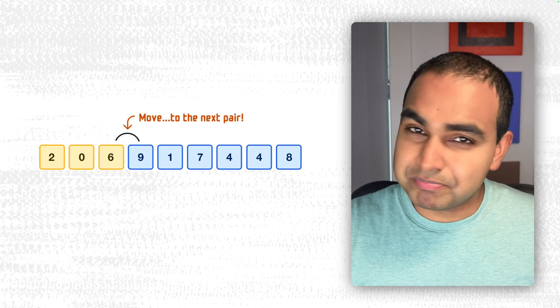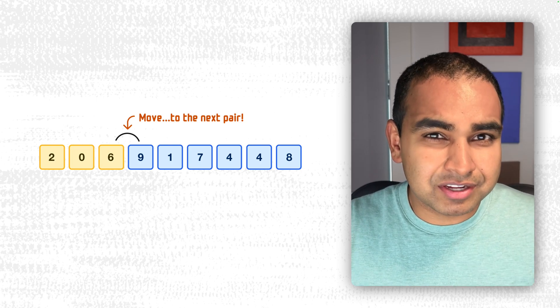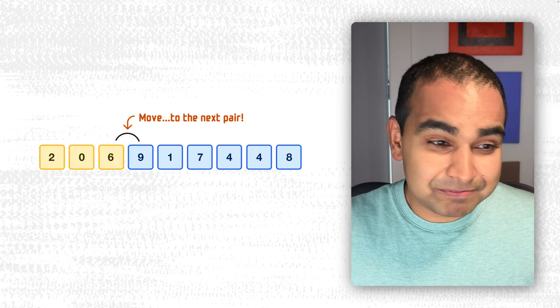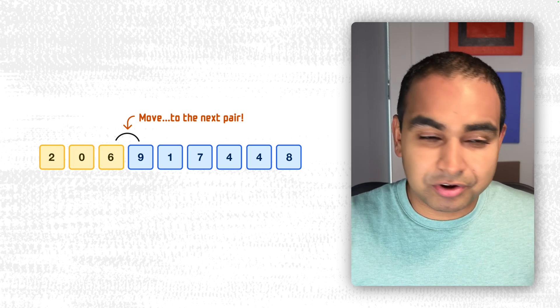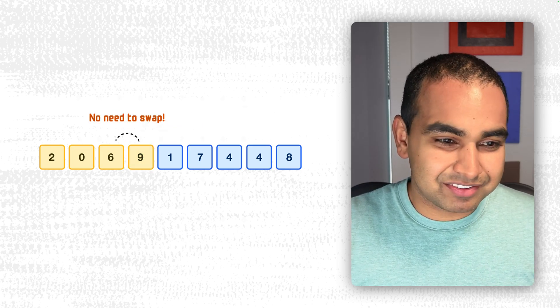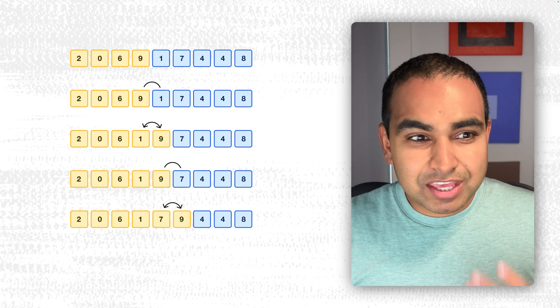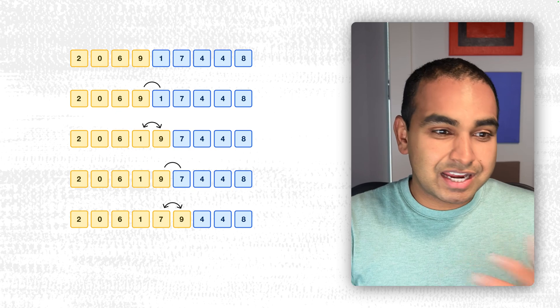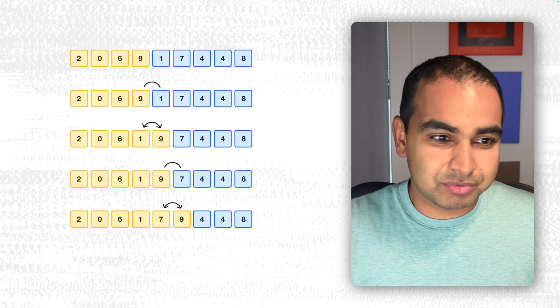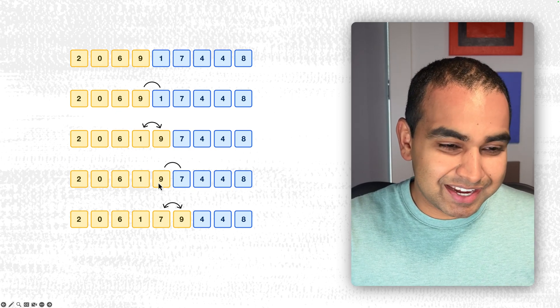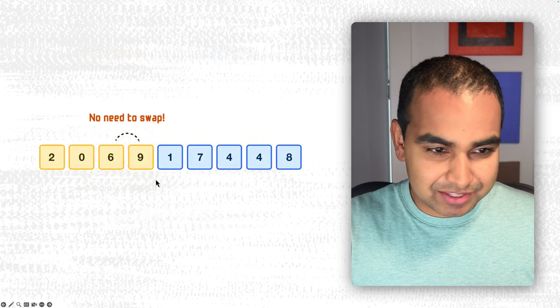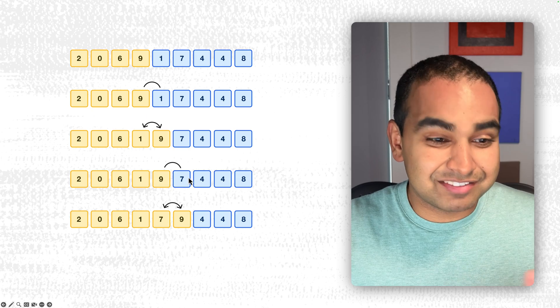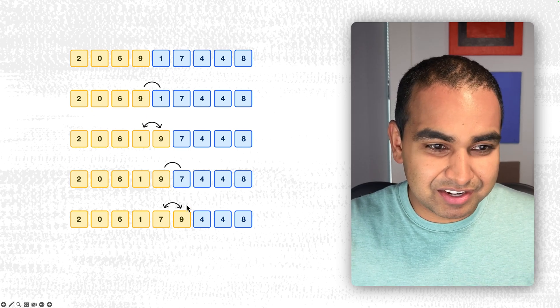Then we repeat the process again. And you probably sort of see a pattern emerging. Our next two adjacent numbers are 6 and 9. In this case, 6 is less than 9. So they're already sorted. Great. Let's move on to the next set of values. And as we keep going through this over and over again, you will see that we look at 9 and 1. 9 is greater than 1. So we swap it. Then we have 1 and 9. 9 and 7, wrong order. So we swap them. So now it becomes 7 and 9.